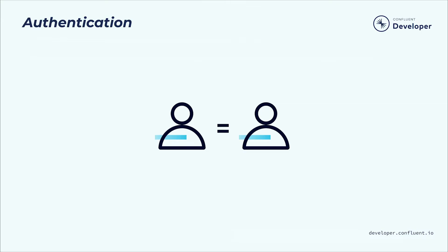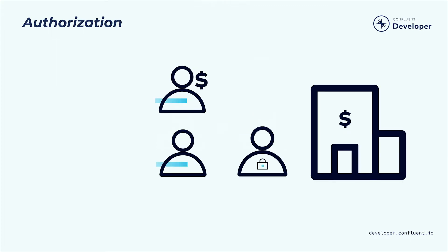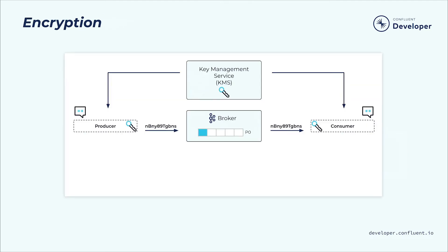First, we'll take a look at authentication, verifying you are who you say you are. Then we'll take a look at authorization, which guarantees that each client only has the access they should have, nothing more, nothing less. Then we'll take a look at encryption, mathematically scrambling your data so that only authorized people or services can read and understand the information.